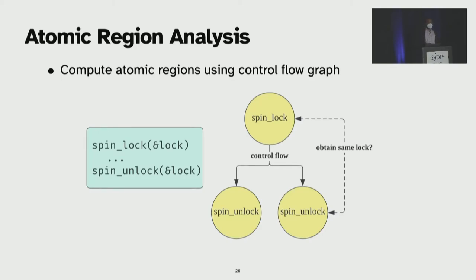Next, to determine whether a lock unlock pair forms a critical section, we use alias relations to check whether the call pair obtained the same lock.